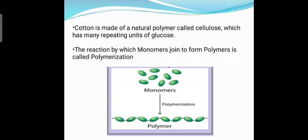Cotton is a natural fiber made up of a natural polymer called cellulose. The monomeric unit of the cellulose polymer is glucose. The reaction by which monomers join to form polymers is called polymerization. In this picture you can see the process of polymerization — a number of separate monomer units, when polymerized, connect to each other and form a long chain molecule called a polymer.